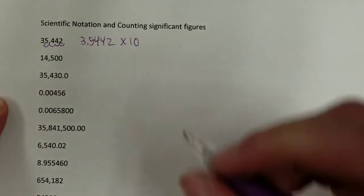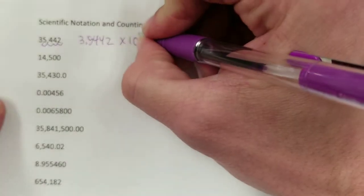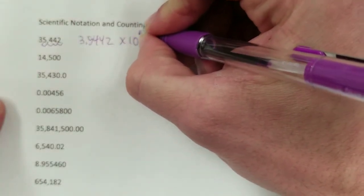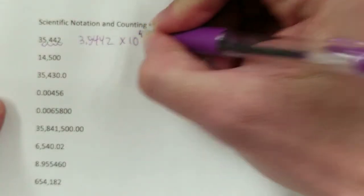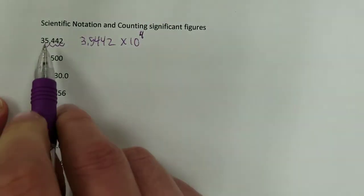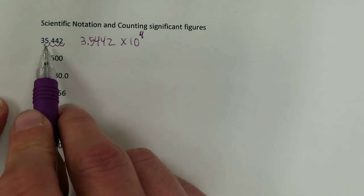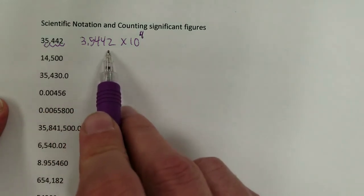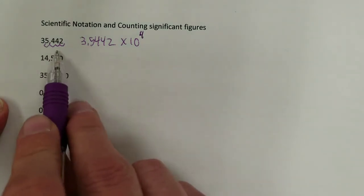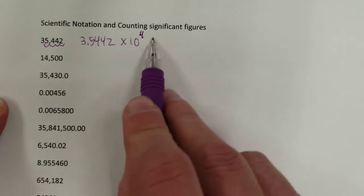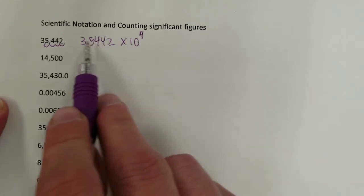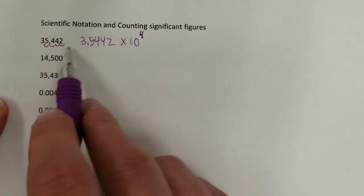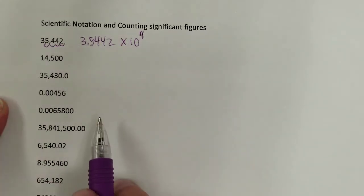Since we have to move the decimal 4 places, we're going to say this number is times 10 to the 4th power. Thus, this regular number is written as this scientific notation. These represent the exact same number — it's just a more compact, or different, way of representing this.